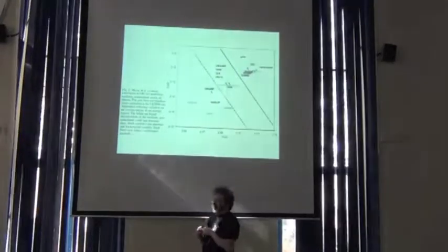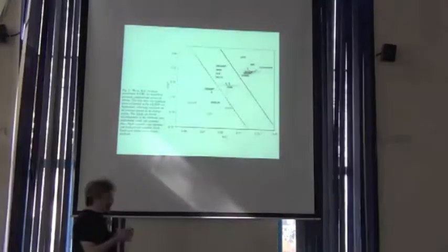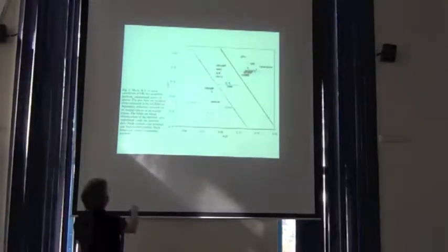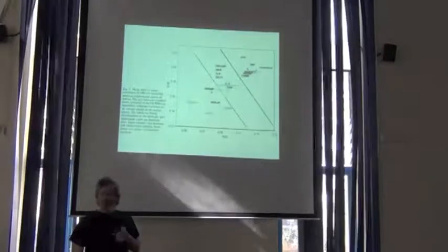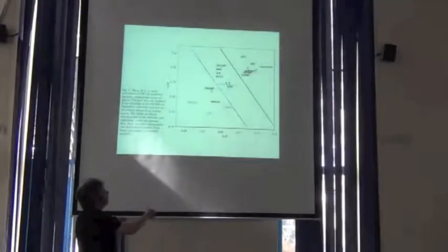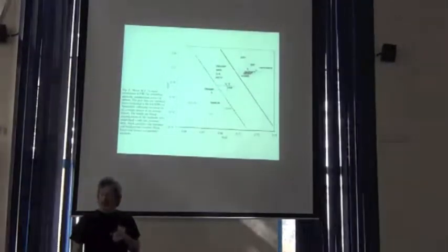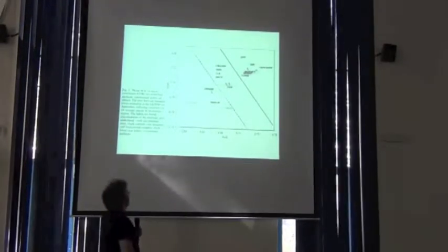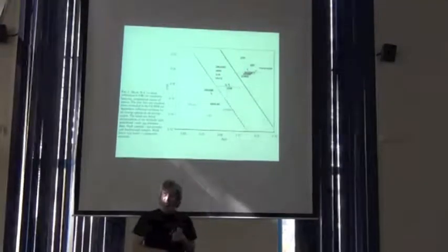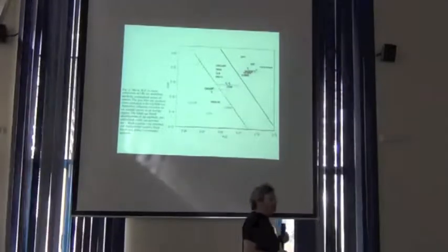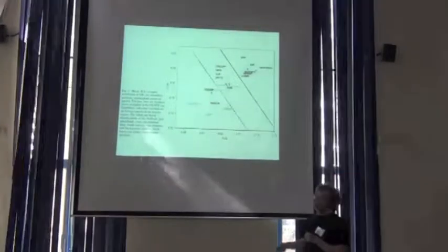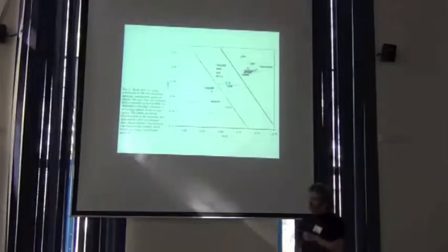You've already seen this graph, but I want to look at it differently. These are two measures of model quality. Just imagine the perfect algorithm ends up in the upper right. We've always called this graph the good, the bad, and the ugly, if you watch Clint Eastwood movies. These are algorithms that did very well under both measures, these did OK, and these did poorly.